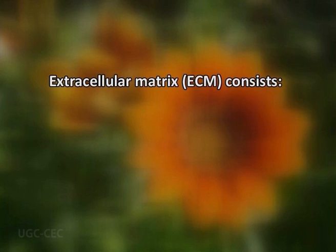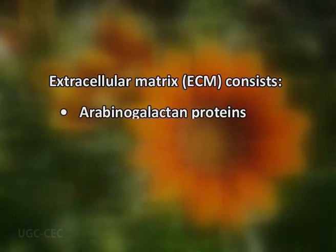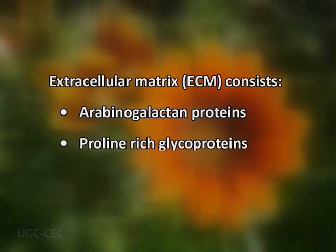During its growth through the style, the pollen tubes interact with the components of the extracellular matrix of the transmitting tissue. The extracellular matrix, also called ECM, consists of a complex mixture of proteins, particularly the arabinogalactan proteins, proline-rich glycoproteins, and extensin-like proteins. The arabinogalactan proteins are highly glycosylated hydroxyproline-rich glycoproteins. A class of AGPs called transmitting tissue specific proteins have been known to play multiple roles such as pollen tube adhesion, pollen tube guidance in the style, and also the nutrition of the pollen tube.